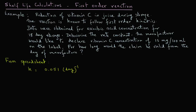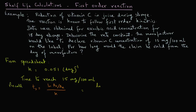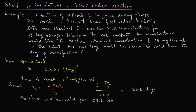To determine the time to reach 15 milligrams per 100 milliliter, we use the shelf-life expression derived previously for first-order reactions: shelf life equals ln(A₀ / Aₑ) divided by K, where A₀ is the initial concentration and Aₑ is the final concentration. The initial concentration is 50 mg/100 mL, the final concentration is 15 mg/100 mL, and K is 0.051 day⁻¹. This gives us 23.6 days — so the manufacturer's claim will be valid for 23.6 days.